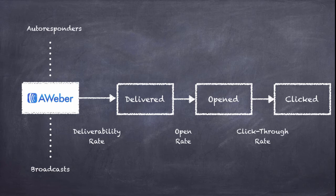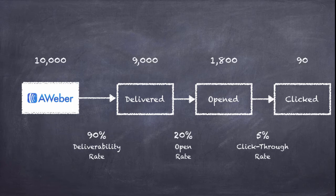Let's say in your Aweber account you have 10,000 subscribers — that looks like a lot of people. When you want to promote a product as an affiliate you think, 'I have 10,000 subscribers, I can make money very easily.' But when we factor in all the stages: let's say you have a 90% deliverability rate, meaning only 9,000 of those 10,000 subscribers actually receive your email. The rest have outdated addresses, full inboxes, or emails going to spam.